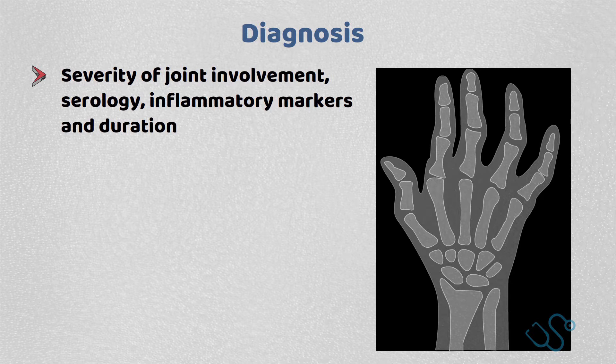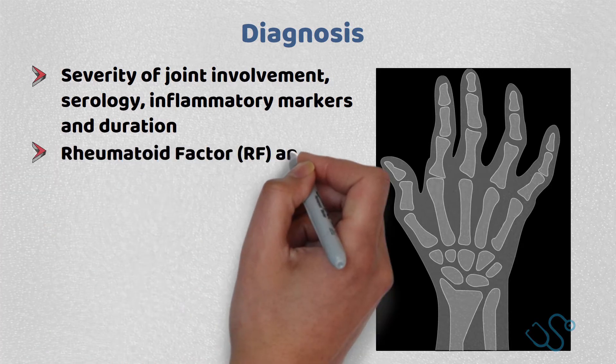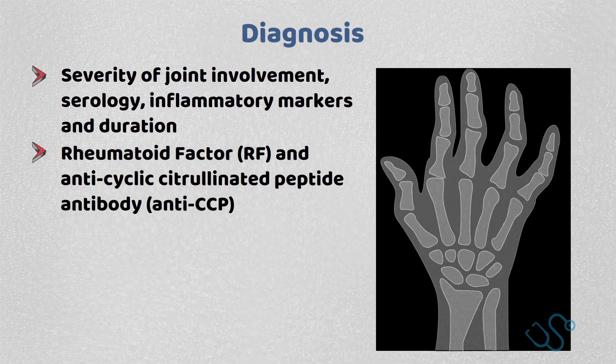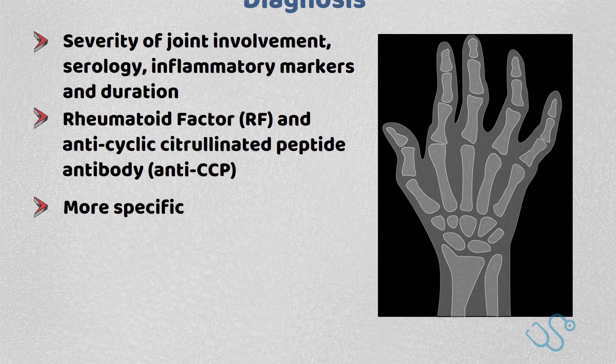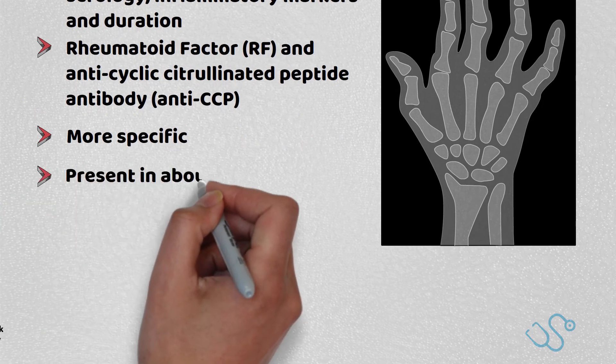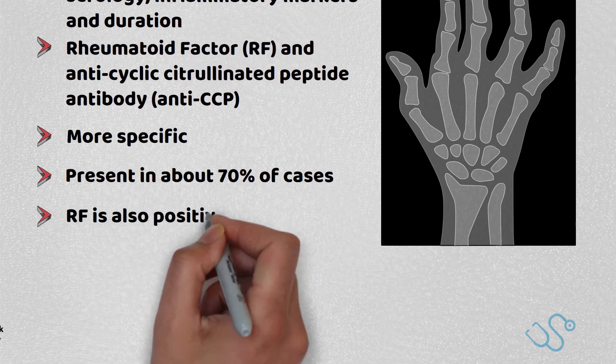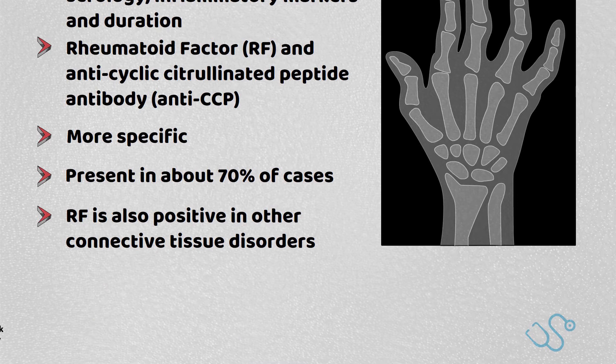Serologically speaking, it's important to be familiar with two specific antibodies: rheumatoid factor and anti-cyclic citrullinated peptide antibody, or anti-CCP, of which the latter is far more specific to rheumatoid arthritis. Both are present in about 70% of cases, but rheumatoid factor is also positive in a number of other connective tissue disorders.